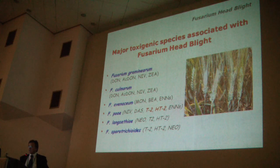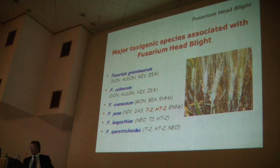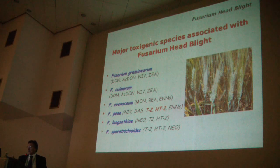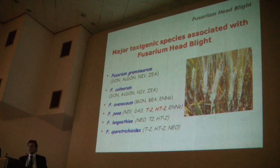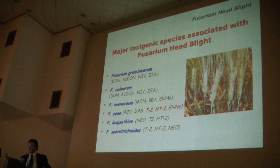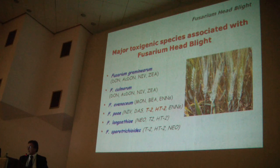Each of these species has its own specific toxicological profile. There are often misleading reports — for example, one species is often claimed as a T2 and HT2 producing species, and I will show you that this is a wrong claim and explain why.